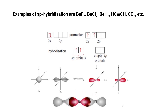Taking BeCl2 as an example: beryllium has an electronic configuration of 1s2, 2s2. When one electron moves to the 2p orbital and hybridization takes place, the s and p orbitals reach the same energy level, leaving two empty 2p orbitals. The 2s and 2p orbitals combine, the hybridized orbital shapes form, and the two Be sp hybridized orbitals combine with the p orbitals of the chlorine atoms, giving a linear geometry with a bond angle of 180 degrees.